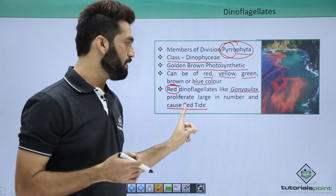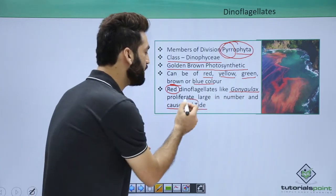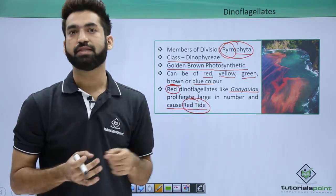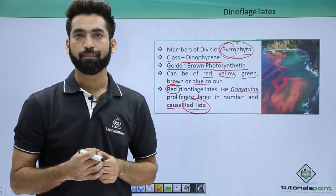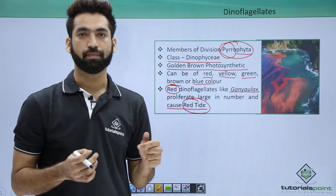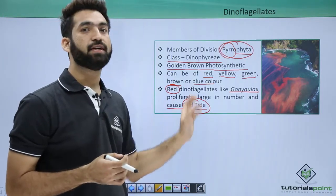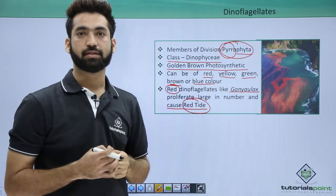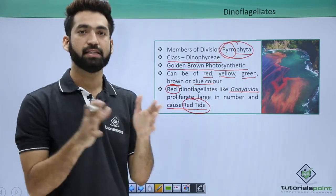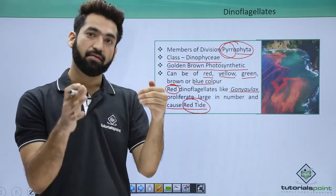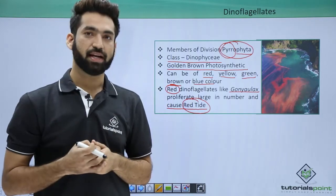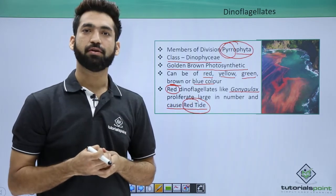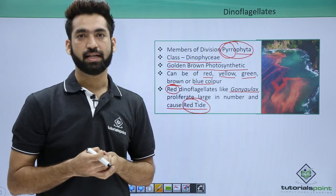Always remember: red tides are caused by the dinoflagellate Gonyaulax, which is a protista. The Red Sea, on the other hand, is caused by a cyanobacterium — Trichodesmium erythraeum. So red tide is due to protista, and the Red Sea is due to cyanobacteria or blue-green algae. In the next session we will detail the characters of dinoflagellates.